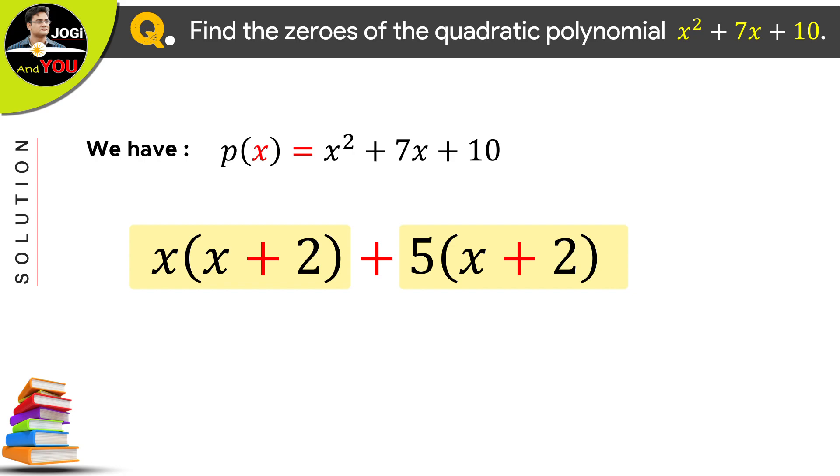This time, x plus 2 is common in both the terms. So, let us take it as common. And write the remaining x plus 5 in the second bracket.